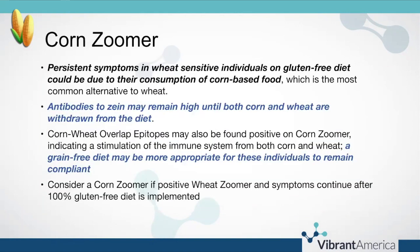To reiterate: persistent symptoms in wheat sensitive individuals who are already on a gluten-free diet could be due to their consumption of corn-based foods, which is the most common alternative to wheat. Antibodies to corn zein will remain elevated until both corn and wheat are withdrawn from the diet. Upon retest, if an individual has gone wheat free but not corn free, you may still see these antibodies elevated. Corn-wheat overlap epitopes found positive on the wheat zoomer indicate immune stimulation from both corn and wheat, and again both grains need to be eliminated. Also consider running a corn zoomer if you have a positive wheat zoomer and symptoms continue to persist after going on a gluten-free diet.